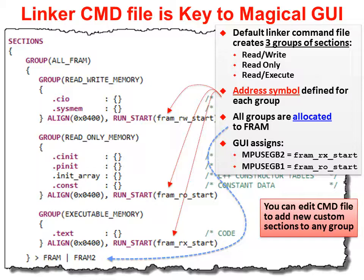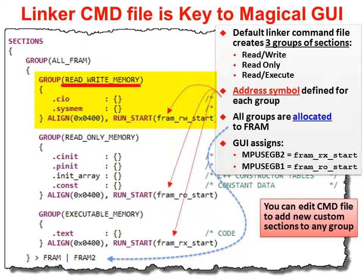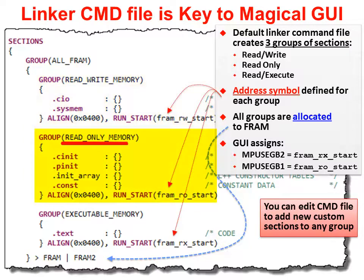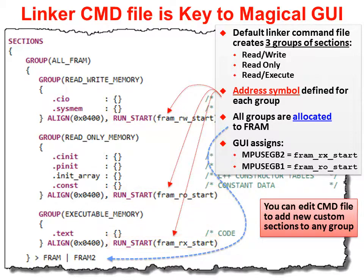But how does the tool know what settings to use? TI's default linker command file is the key. This CMD file makes frequent use of the linker's group command, which allows the linker to group sections together. They're creating a single group that contains all of the information going into FRAM, further broken down into three groups: the read-write memory group for RAM-like allocations, the read-only group for initialized data like .cinit, and the executable memory group for code. The run-start commands create global symbols correlating to the first address in each output section, giving the GUI three global variables — one for each group — to automatically assign to the memory segment registers.